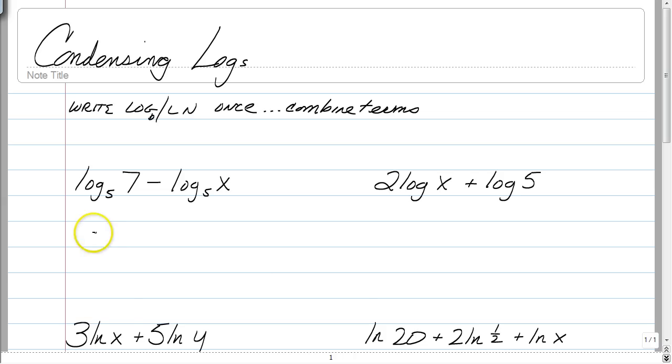As you can see, we have a log base 5 for this problem, so I wrote it once. I'm done. Now, I just need to look at my 7 and my x. Since we are subtracting, we know that means this was division. So, it's 7 over x. Guess what? You're done with the first problem already.